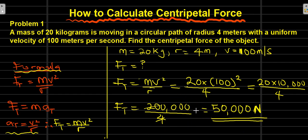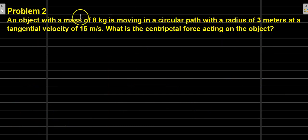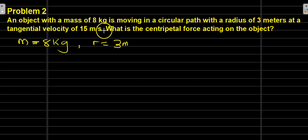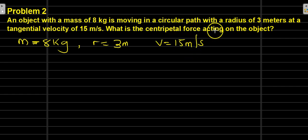Let us look at another problem. An object with a mass of 8 kg is moving in a circular path. We have a radius of 3 meters, at a velocity of 15 meters per second. What is the centripetal force acting on the object?